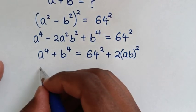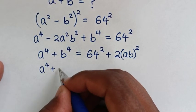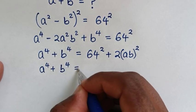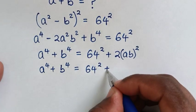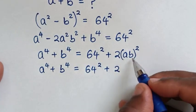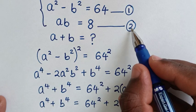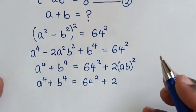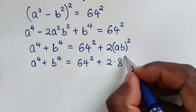So it will be a to the power 4 plus b to the power 4 equals 64 squared plus 2 times ab squared. Since ab equals 8 from equation 2, we substitute 8 squared here.